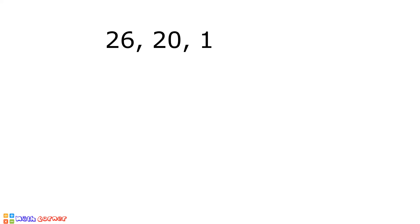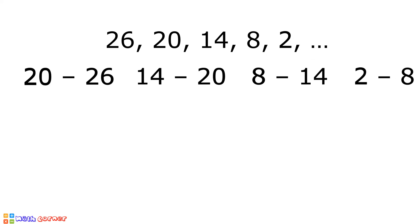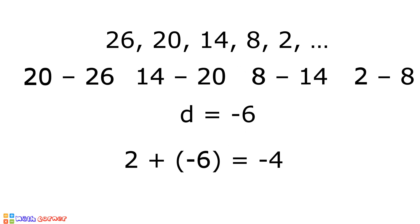Another example: we have 26, 20, 14, 8, 2, and so on. Again, let us determine if there is a common difference. 20 minus 26, 14 minus 20, 8 minus 14, and 2 minus 8. There is a common difference of negative 6. Hence, it is an example of arithmetic sequence. To determine the next term, 2 plus negative 6 is equal to negative 4. A sub 6, or the sixth term of this arithmetic sequence, is equal to negative 4.